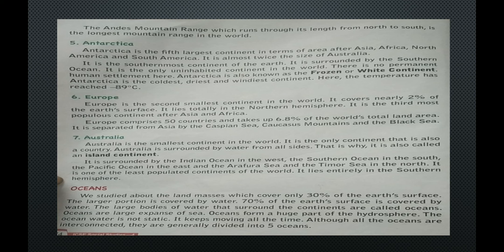Antarctica is the southernmost continent of the earth, surrounded by the Southern Ocean. It is the only uninhabited continent in the world with no permanent human settlement. Antarctica is also known as the frozen or white continent. It is the coldest, driest and windiest continent, where temperature has reached minus 89 degrees centigrade.